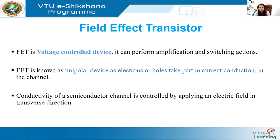Another important feature of FET is that it is a unipolar device. FET is known as a unipolar device because either electrons or holes take part in current conduction — not both as in BJT. In BJT, it was called bipolar because both electrons and holes take part in conduction. In FET, only electrons or holes carry current in the channel. Like BJT, the parameters of FET are also temperature dependent.